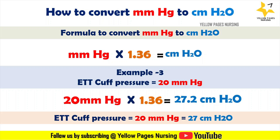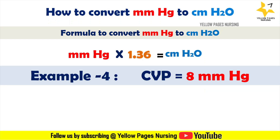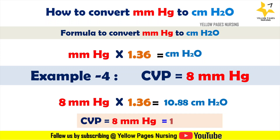Next example: central venous pressure equals 8 mmHg. So 8 multiplied by 1.36 gives the answer 10.88. Therefore, the central venous pressure of 8 mmHg is equal to 11 centimeter H2O.